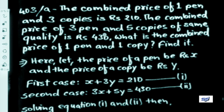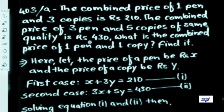The second condition: three pens and five copies gives 3x plus 5y equals 430. Here, pen is assumed as x, so three pens is 3x, and five copies is 5y. So 3x plus 5y equals 430. Let this be equation 2. Equation 1 comes from the first case and equation 2 comes from the second case. On solving these two equations, we will get the values of x and y.